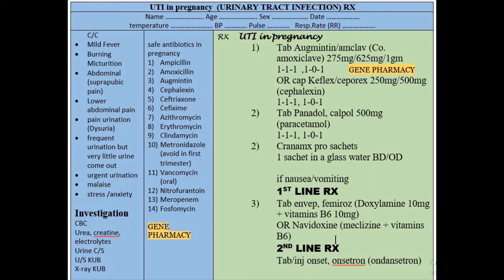If the first-line treatment is not effective, you should go towards the second-line treatment: tablets or injections — Ondansetron. Ondansetron is a second-line antiemetic option.